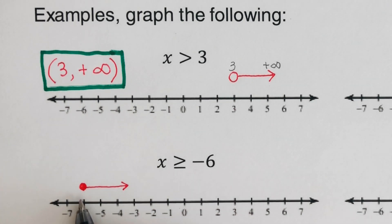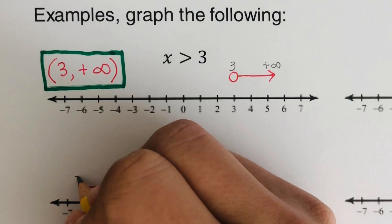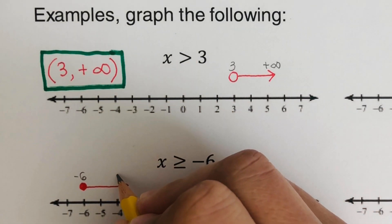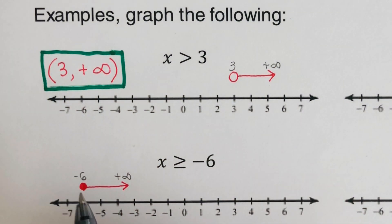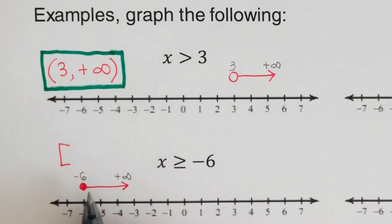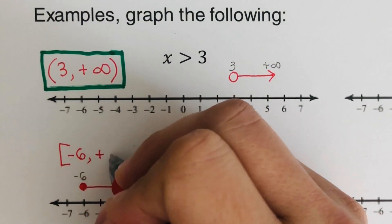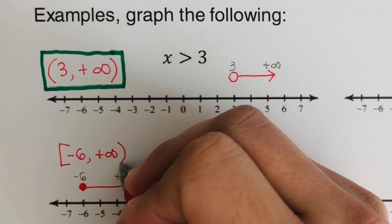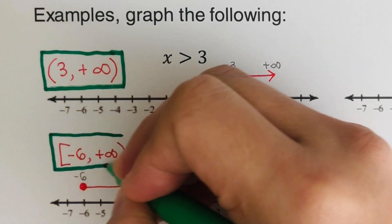To express this solution in interval notation: the leftmost part is negative 6, and it goes all the way to positive infinity. Since this is a closed circle, we use a bracket on negative 6. For infinity, we always use a parenthesis. So the interval notation is [-6, +∞). This is our solution in both interval notation and graph form.